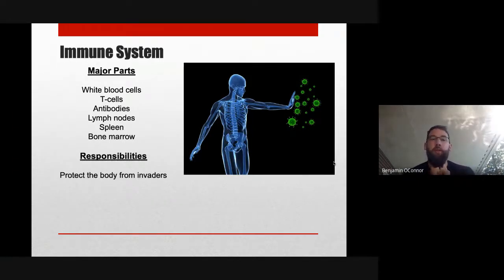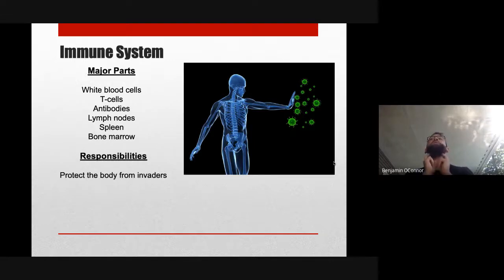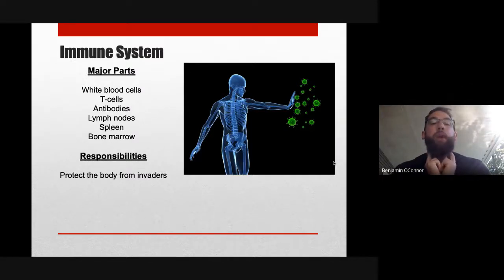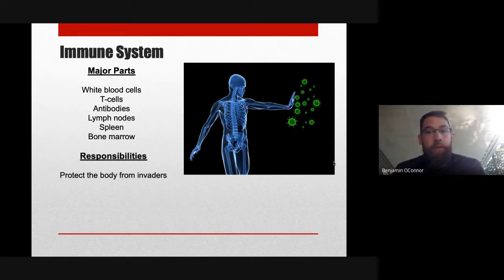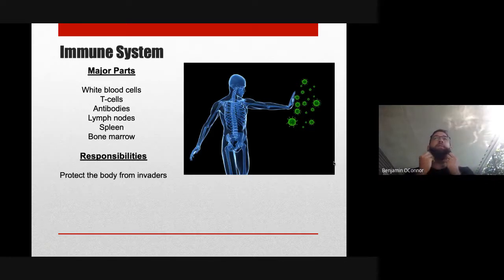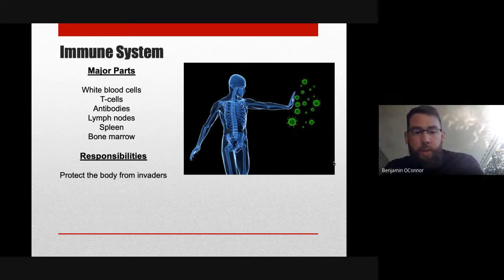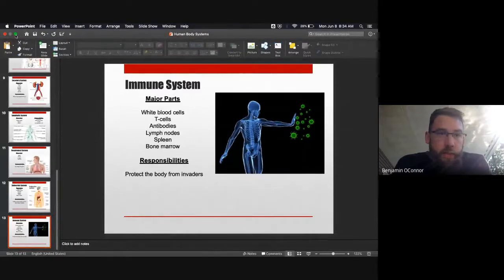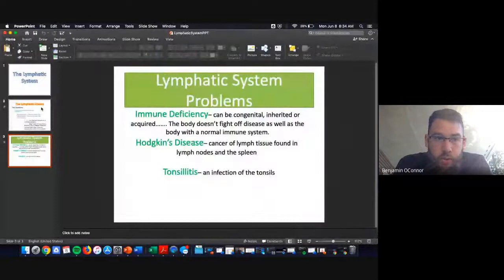You have two lymph nodes right where your chin line meets your neck. These lymph areas are essentially like a police department — white blood cells, T cells, antibodies, and all defense mechanisms hang out there until a signal is sent that there's a foreign invader. When we get sick, chemical messengers are sent throughout the body, and the lymphatic system finds the source of that hormone signal and goes to take care of the invader.